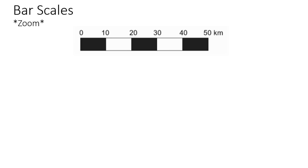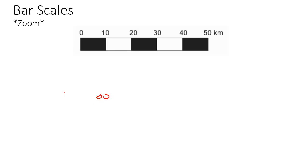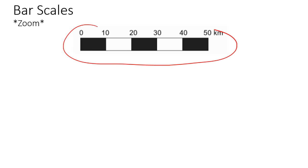Hey guys, hope you're well. So in previous lessons, we looked at ratio scales, which is when we had things like 1 to 10,000. Now in this lesson, we're going to be talking about a new type of scale, which is called a bar scale. And this is typically what it looks like.